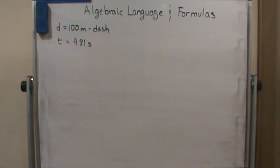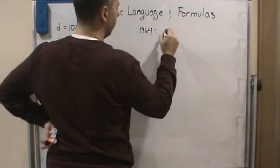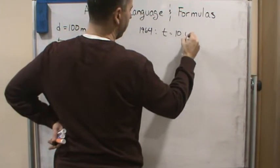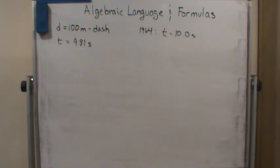In the 1964 Games, Bob Hayes of the United States won the same event in a time of 10.0 seconds. So 1964, the time was 10.0 seconds. Suppose these two champions could have run against each other at those same speeds. How far behind in meters would Hayes be as Bolt crossed the finish line? This is a good one.